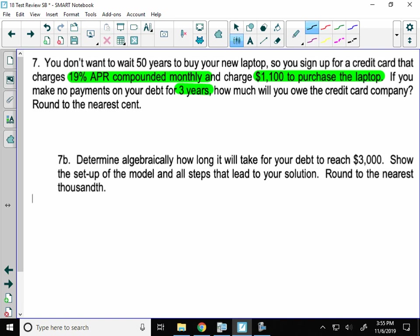So this is the same formula because we are compounded at a set interval, which is monthly. So when I set this up, I want to know the amount as my balance after 3 years. I started by charging $1,100. And interest is compounded at 19% monthly. So 12 times a year. I have 12 times T for 3 years.